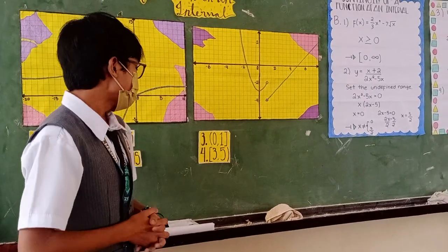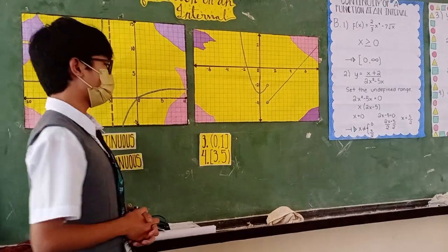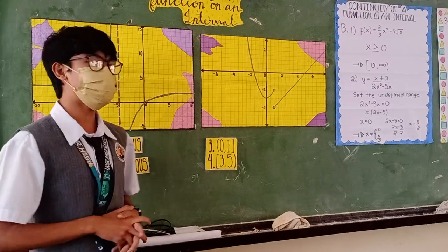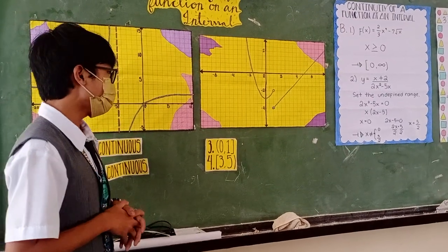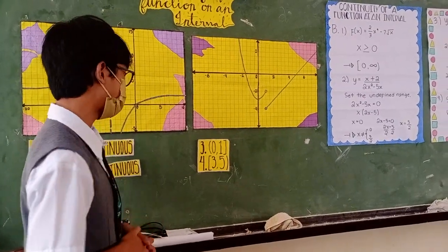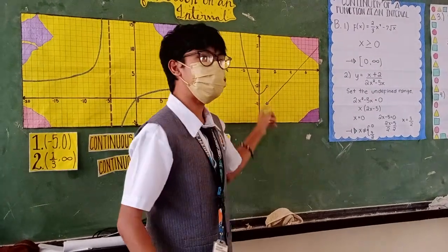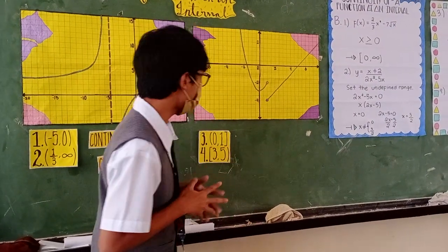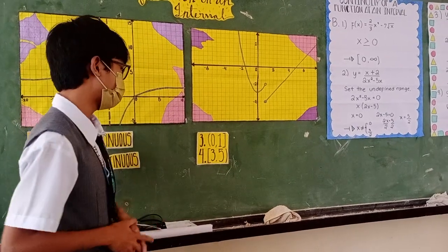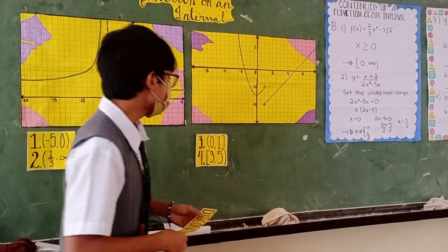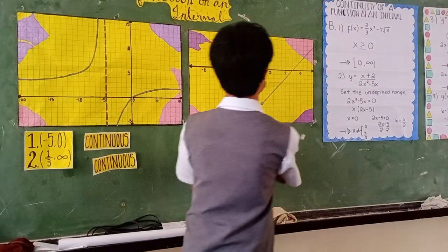For item number three, the given interval is zero and one. This given interval is an example of a combination interval, where zero should not be included while one should be included while tracing the line. From this point to this point, this circle is hollow, so one should not be included. But in the given interval, it is said that one should be included. Therefore, this graph is discontinuous.